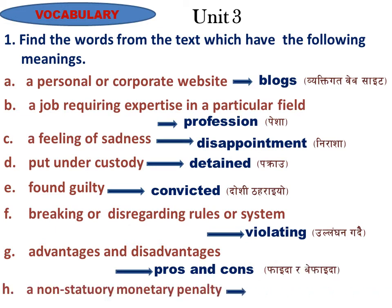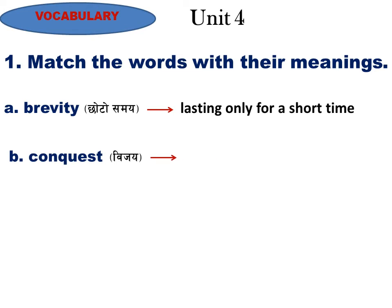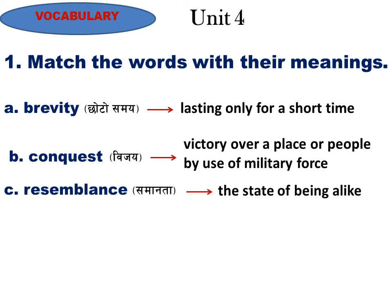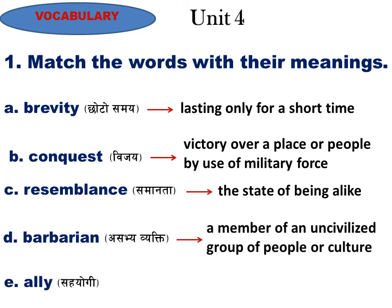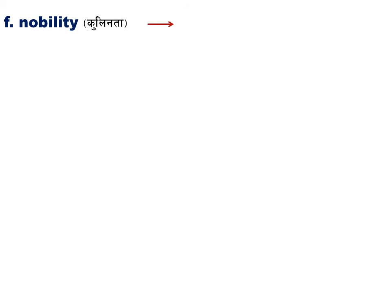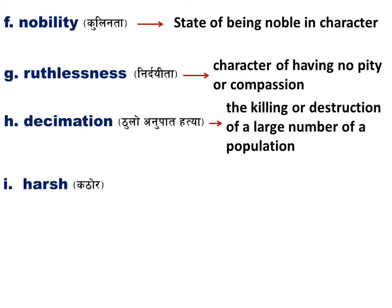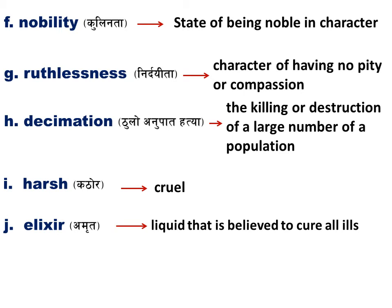H: A non-statutory monetary penalty — 'amercement' (jariwana). Unit Four, Question One: Match the words with their meanings. A: 'Brevity' — lasting only for a short time. B: 'Conquest' — victory over a place or people by use of military force. C: 'Resemblance' — the state of being alike. D: 'Barbarian' — a member of an uncivilized group. E: 'Ally' — one state united to another by a treaty for a military purpose. F: 'Nobility' — being noble in character. G: 'Ruthlessness' — character of having no pity or compassion. H: 'Decimation' — killing or destruction of a large number of a population. I: 'Harsh' — cruel. J: 'Elixir' — a liquid believed to cure all ills.